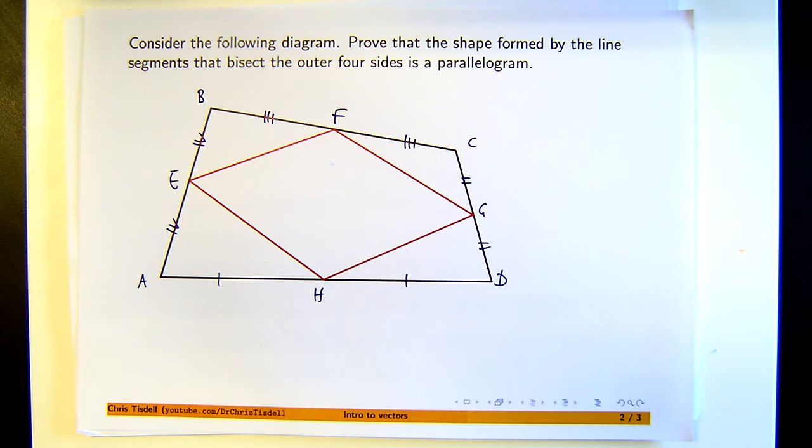For EH equals FG. Okay, the vector from E to F equals the vector from H to G. Is that enough? Is that all we need? We haven't figured that, but yes, that's all we need.